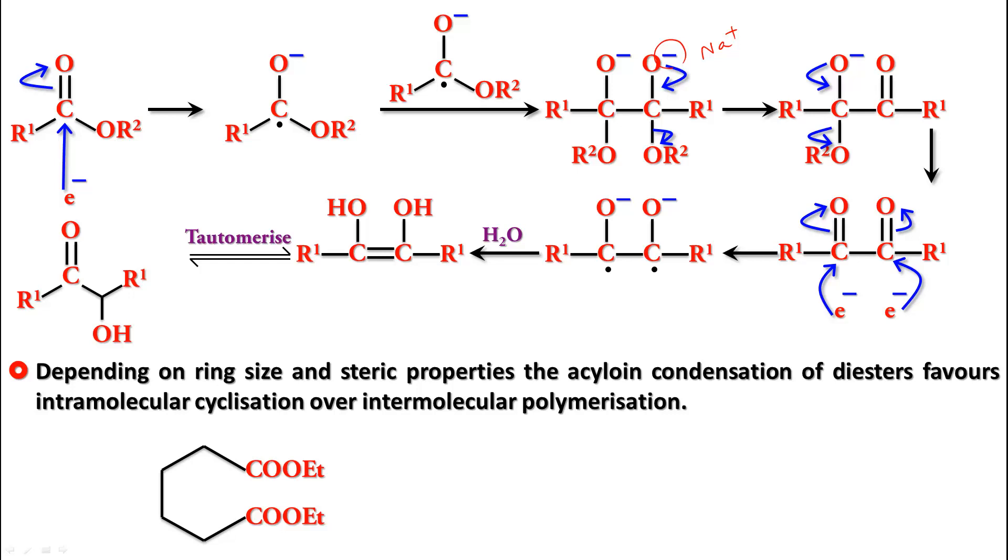As you can see, this one combines with this one. So these two carbon atoms are going to combine here and you will get an alpha hydroxy ketone which is intramolecular reaction. Therefore, this is acyloin condensation. Thank you.